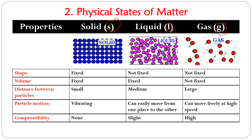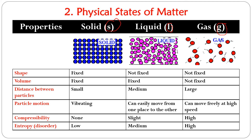Regarding compressibility: solids are non-compressible — it is essentially impossible to compress them. Liquids can be compressed only very slightly. Gases, however, are highly compressible because there is so much space between their particles; applying pressure can move those particles closer together into a smaller volume. Finally, entropy measures the disorder or disorganization among particles. Solids have very low entropy, liquids have moderate entropy, and gases have very high entropy due to significant disorganization.